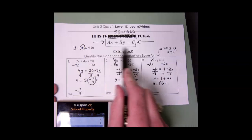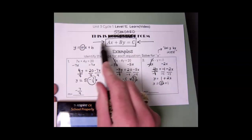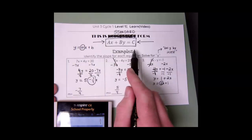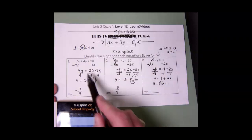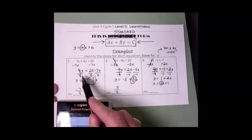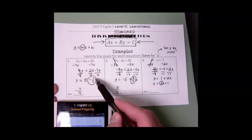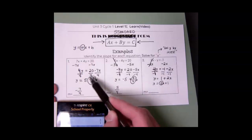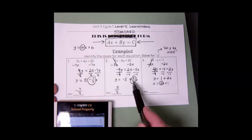So identifying the slope from standard form — what you're going to do is solve for y first by getting y by itself, and then identify what is with your x value. The slopes we found were negative 7 over 4, 5 over 4, and 2.